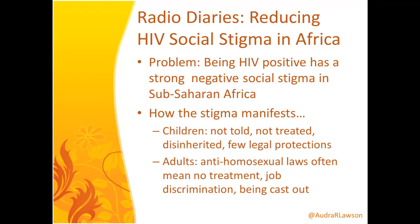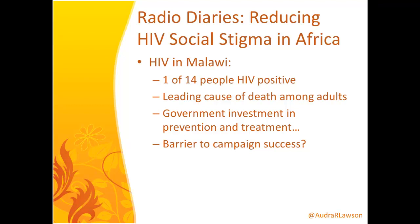In order to tackle the spread of HIV in Africa, researchers had to start with social stigma because it was affecting whether or not people would come forward. In Malawi, where the Radio Diaries was conducted, one in 14 people at the time were HIV positive — the leading cause of death among adults. The government had invested in prevention and treatment campaigns, but because of the social stigma, it just wasn't working. The biggest barrier was the negative social stigma at the personal and community level.